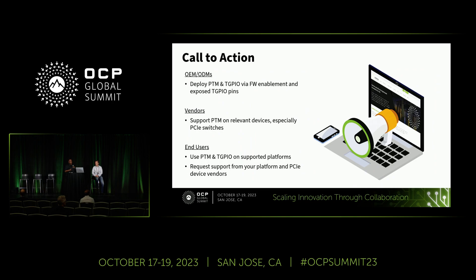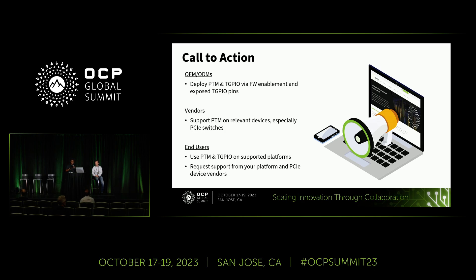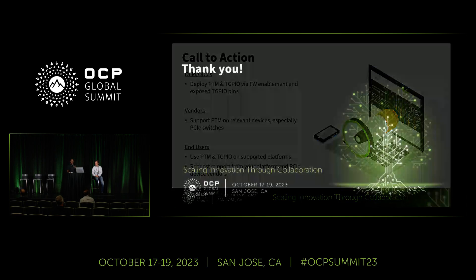In summary: time is distributed with precision globally via NTP and PTP protocols. PTM addresses time uncertainty in those last two centimeters to the CPU or application layers. TGPIO enables ground truth verification and time synchronization accuracy. Silicon, firmware, and software support for PTM and TGPIO is available today in some form. Our call to action: OEMs and ODMs need to deploy PTM and TGPIO with firmware enablement and expose TGPIO pins; vendors need to support PTM on relevant devices, especially PCIe switches; end users need to use PTM and TGPIO on supported platforms, and request support where it's missing.